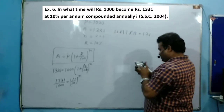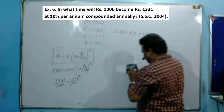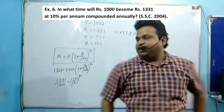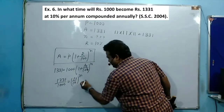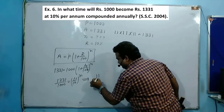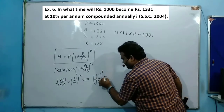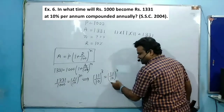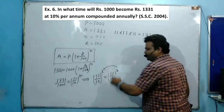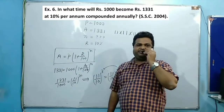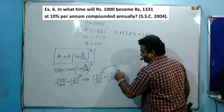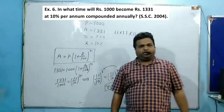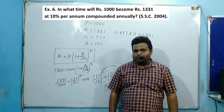Multiplying 121 by 11 gives 1331. Yes, 11³ = 1331. So (11/10)³ = (11/10)^n. Since the base is the same on both sides, we can equate the powers. Therefore n = 3, meaning it takes 3 years.